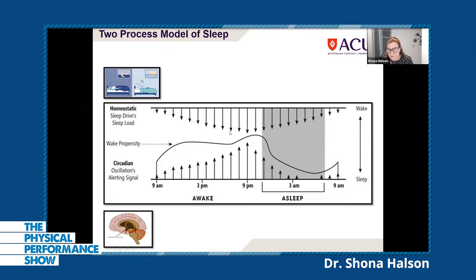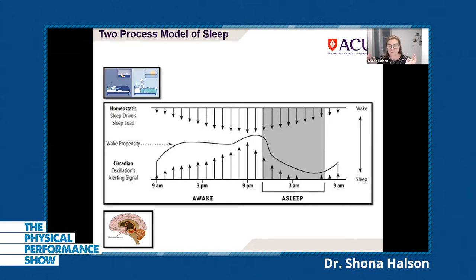When we've been awake for long periods, a chemical called adenosine builds up in the brain. By the end of the day, adenosine builds up and you get sleepy. If you nap, that can clear out some of the adenosine. Anyone who knows about caffeine knows it acts on adenosine receptors, which is why it makes us feel awake — but not for long. People are always trying to hack their sleep, but if you're sleep deprived, the only thing that fixes it is sleep. Caffeine might help short-term but doesn't solve the problem.